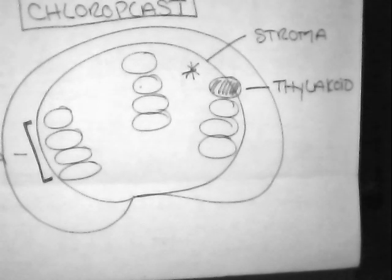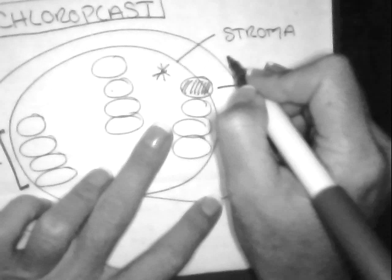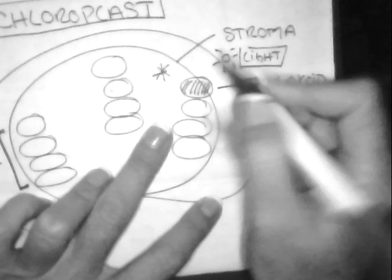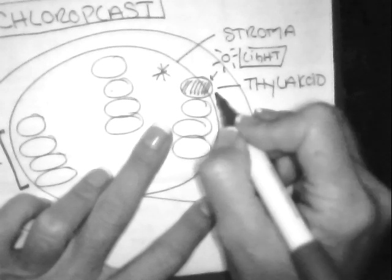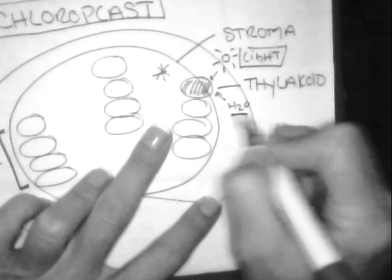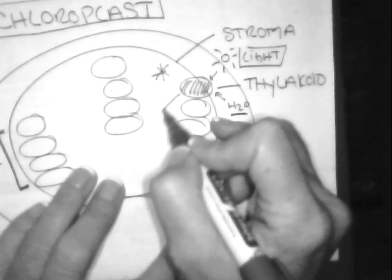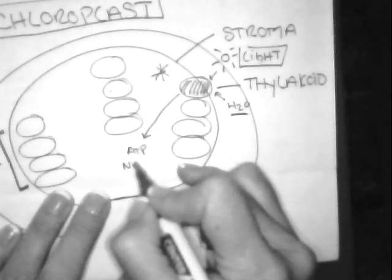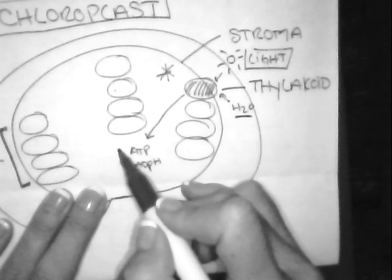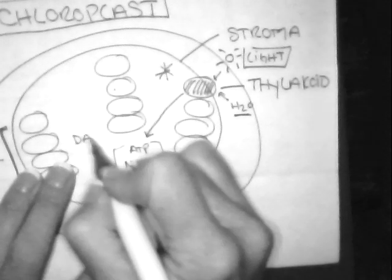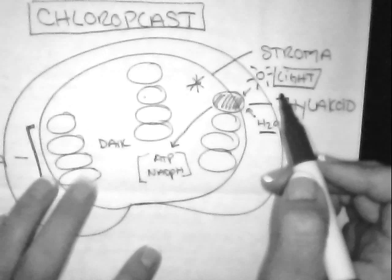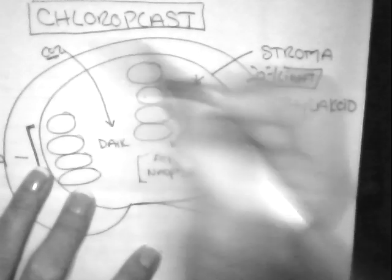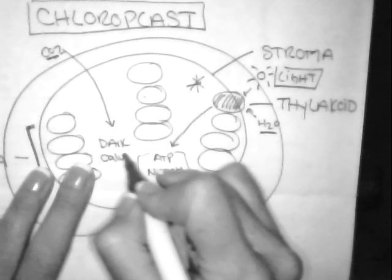The light reaction and the dark reaction. So, thylakoids here are going to be attracting sunlight, so hence this is part of the light reaction. Also, thylakoids attract water, so here is our H2O. So, water and sunlight is part of the light reaction. They're going to pump out into the stroma area some ATP and then NADPH.